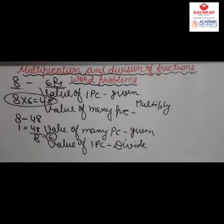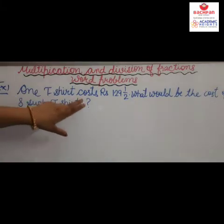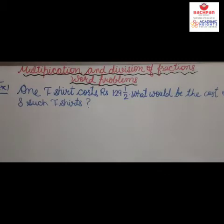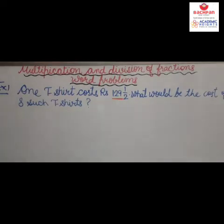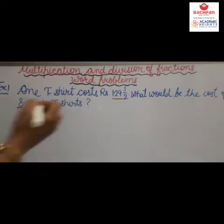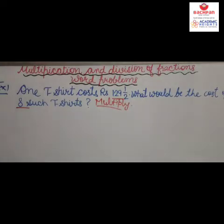Now we come to our story sums. Here we have the first example. One t-shirt costs Rs. 129 and 1/2. What would be the cost of eight such t-shirts? First, check what is given: the cost of one t-shirt. We are given the cost of one t-shirt and have to find the cost of eight. So we do multiply here.